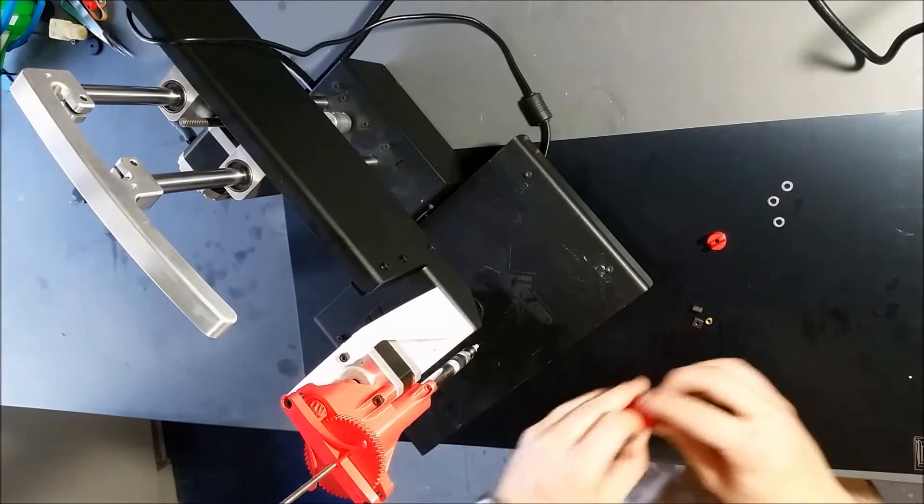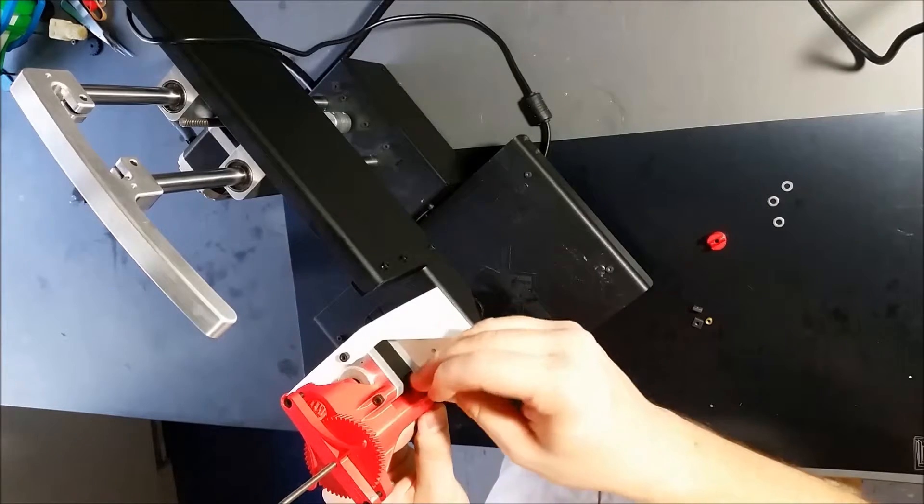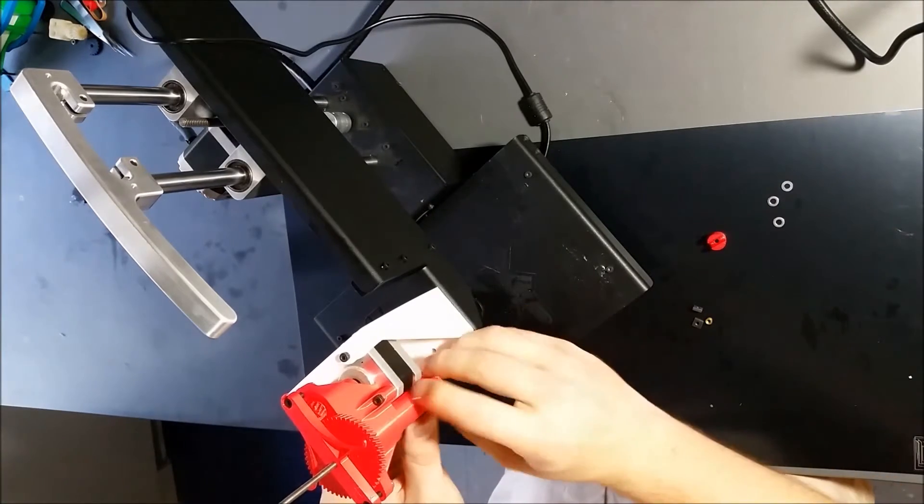Alright, so place the holder for the syringe right there, push the nuts down through the base of the Replostruder.